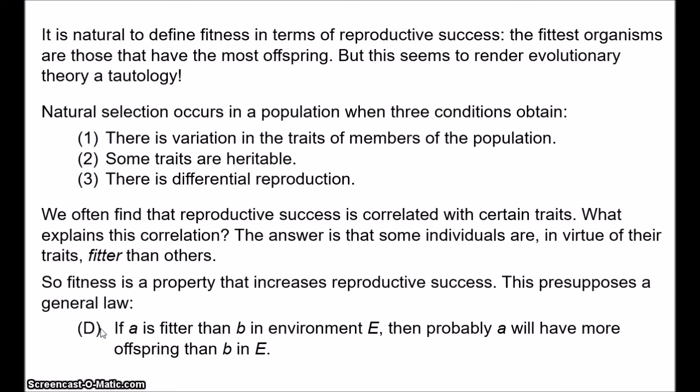It's pretty clear that if fitness is defined to mean reproductive success — so fitter organisms by definition have more offspring — then D becomes a tautology. Or if we say more weakly that fitter organisms are those which probably will have more offspring, again D becomes a tautology. Why does this matter? Tautologies can't explain anything. You can't explain why John is unmarried by pointing out that he's a bachelor. Tautologies aren't falsifiable.